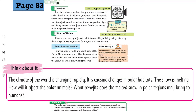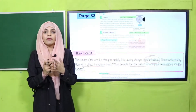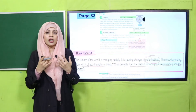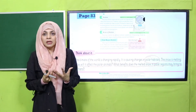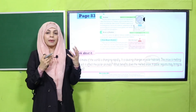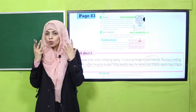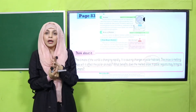My dear students, think about it. The climate of the world is changing rapidly, and it is causing changes in polar habitats. The snow is melting. How will it affect the polar animals? Kyunke hamare earth ka temperature continuously barh raha hai - kyunke humari artificial activities, like bohut zyadha factories aur pollution - jiski wajah se polar regions pe jo ice cap hai, wo continuously melt hoti ja rahi hai. Aap mujhe batayen ke iska kya effect hoga jo plants aur animals wahaan rehte hain unke upar?